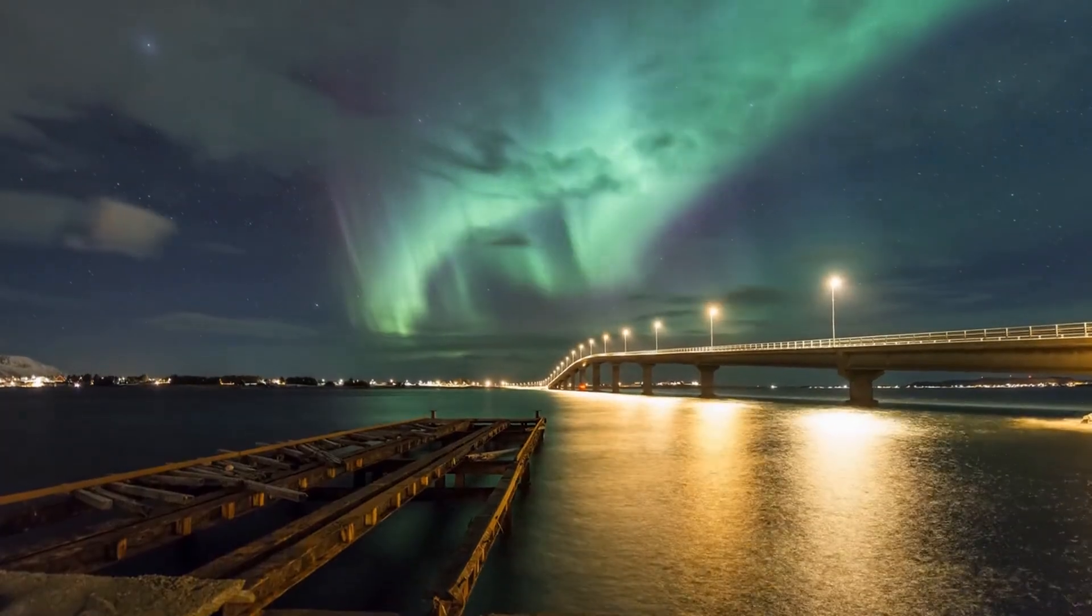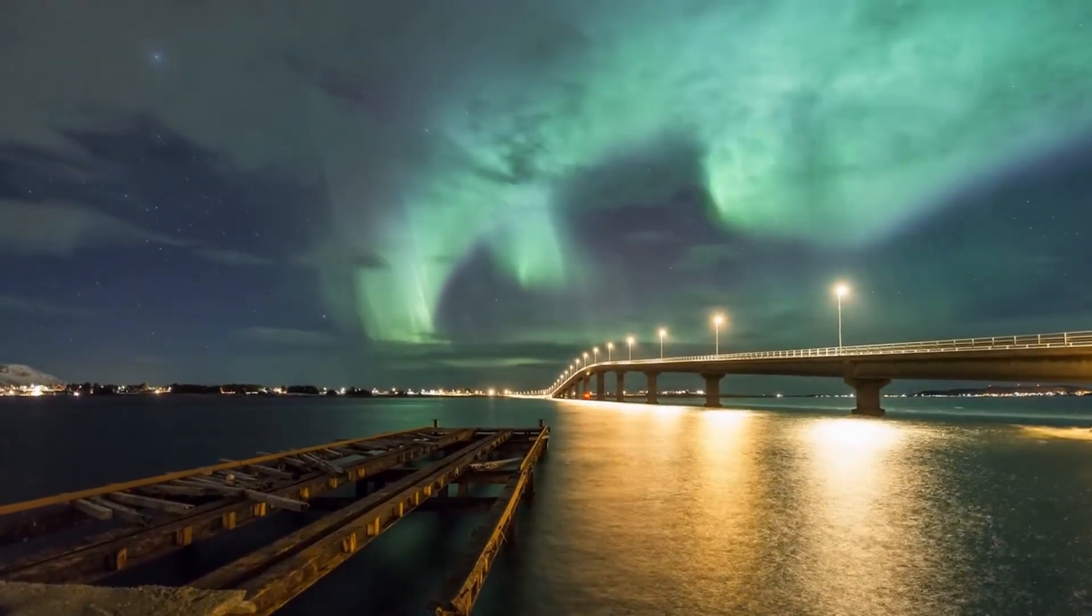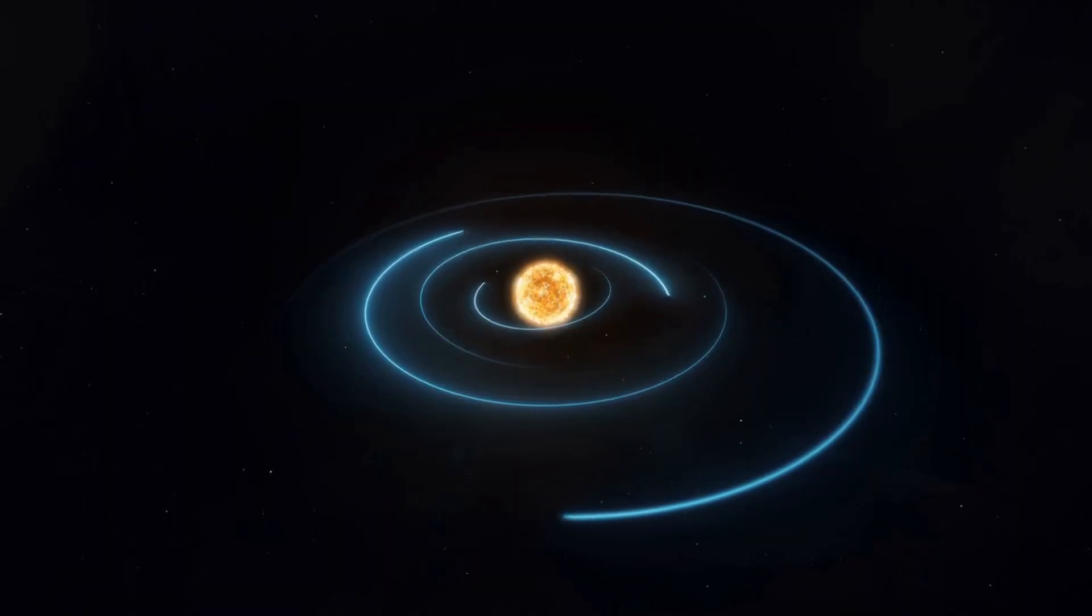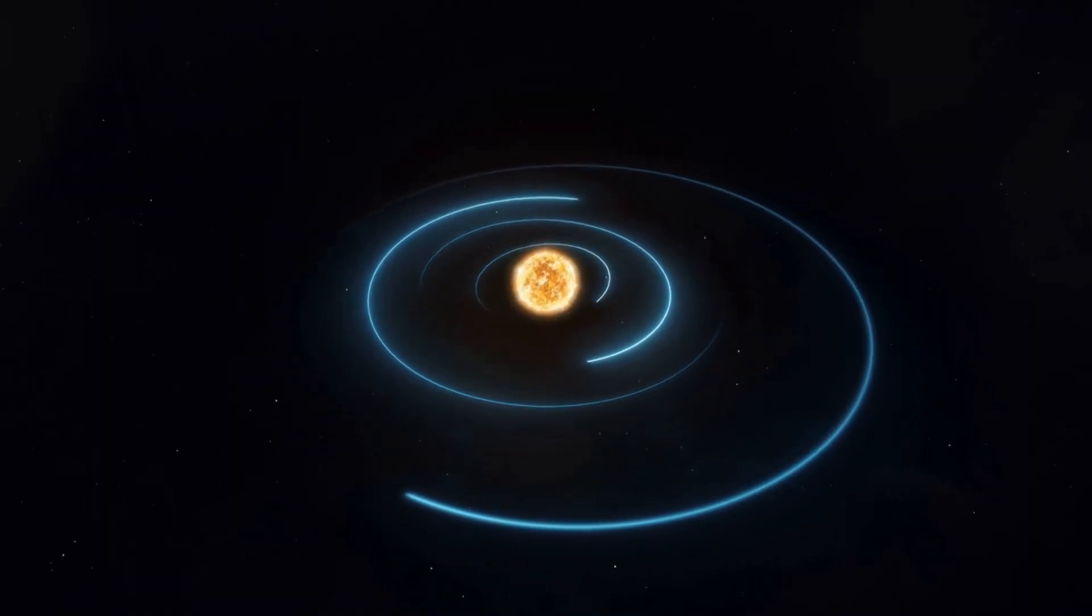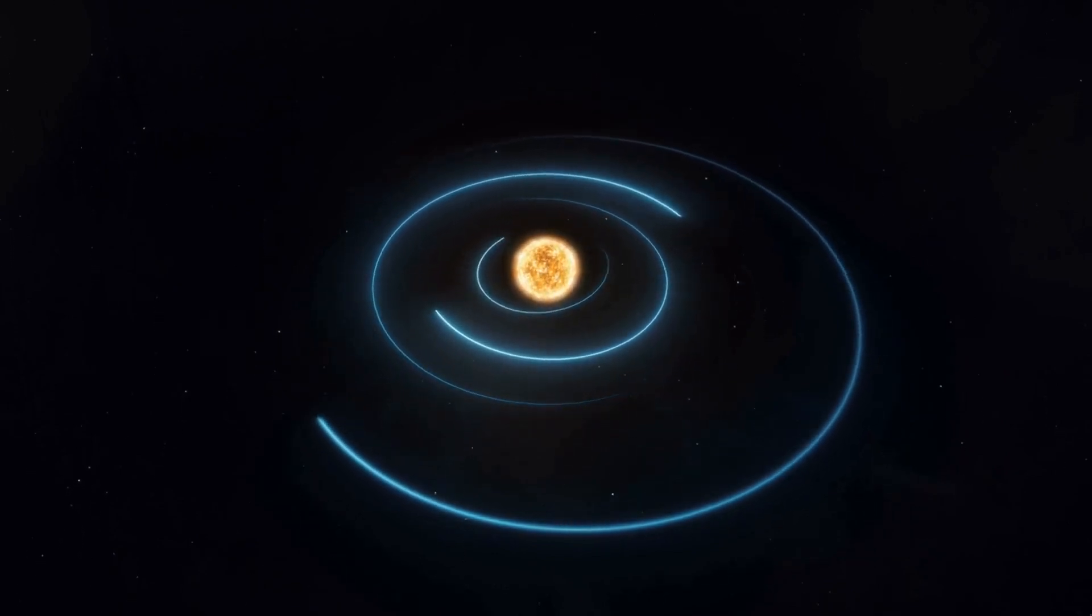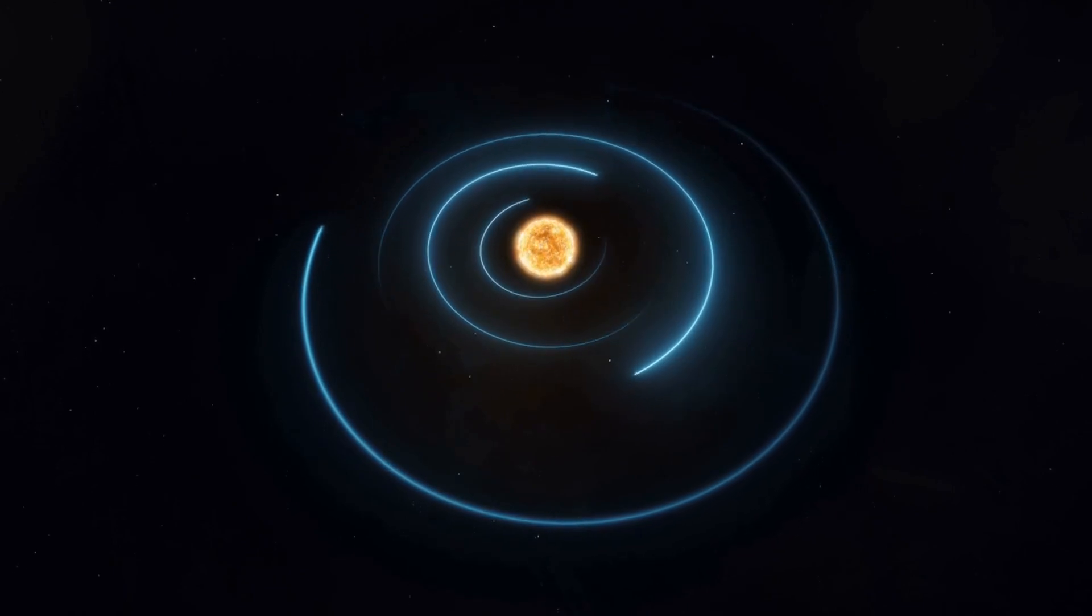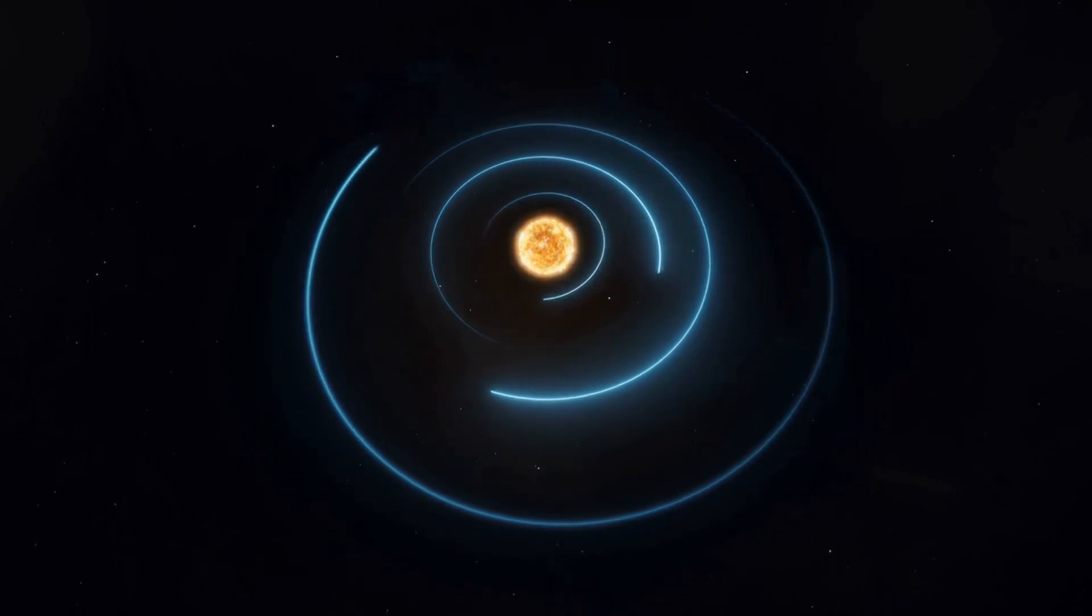The Northern Lights, or Aurora Borealis, are a natural phenomenon that have fascinated people for centuries. They occur when charged particles from the sun, known as the solar wind, interact with the Earth's magnetic field, resulting in a spectacular display of light and color in the night sky.